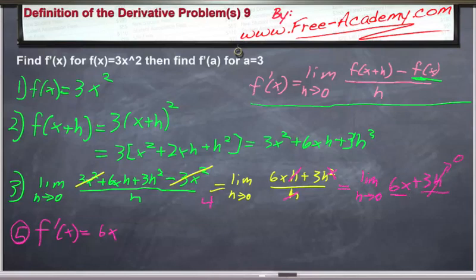And it doesn't affect the 6x at all. So the derivative of f(x) = 3x², or if f(x) = 3x², the derivative f'(x) = 6x. We have solved the first part of the problem.